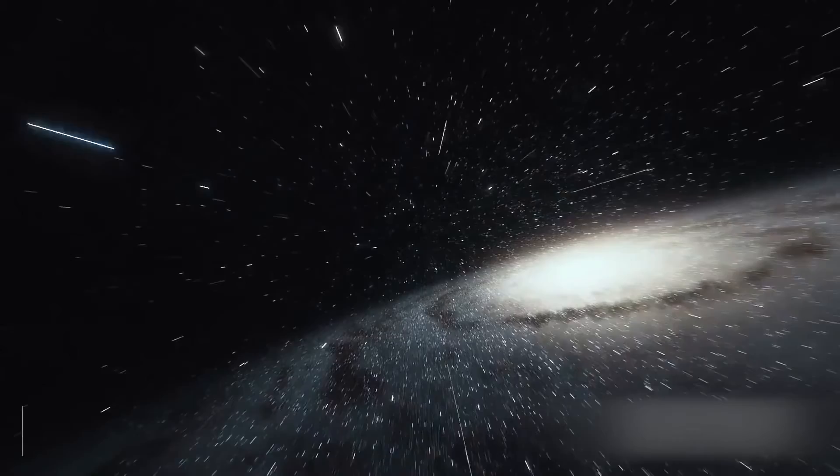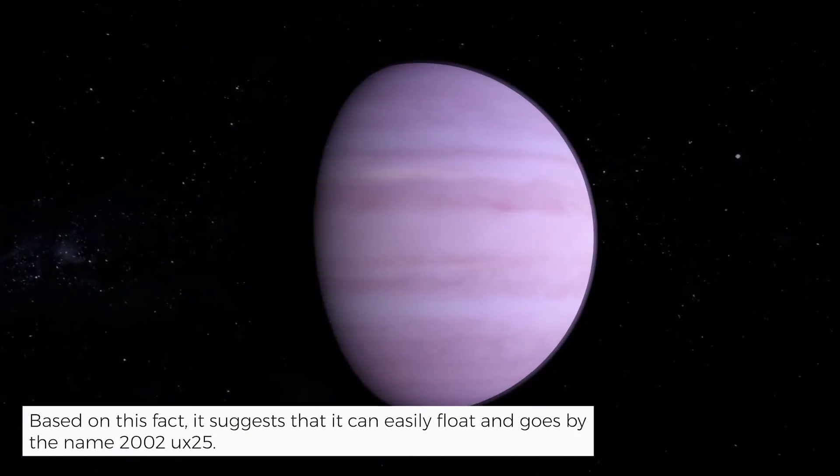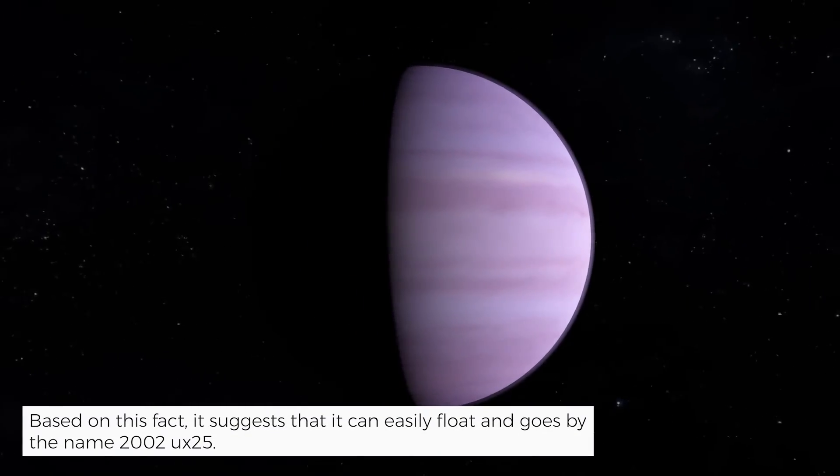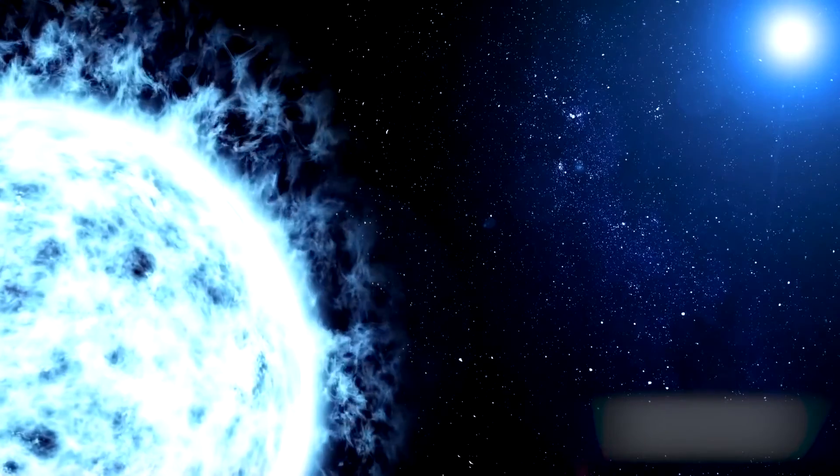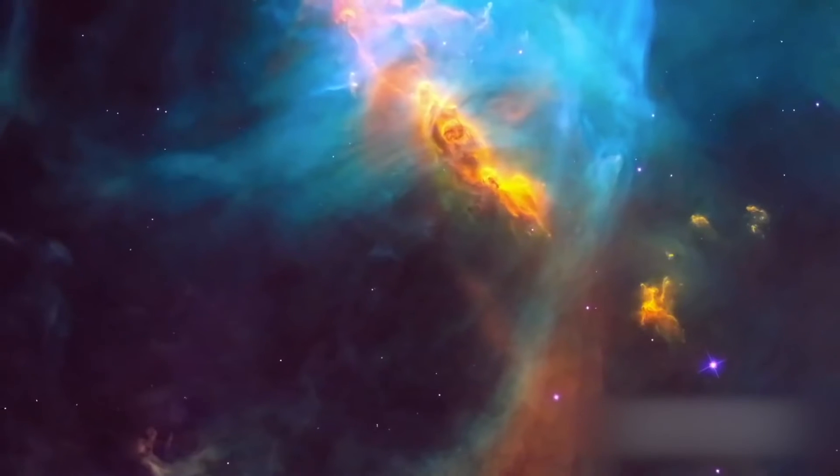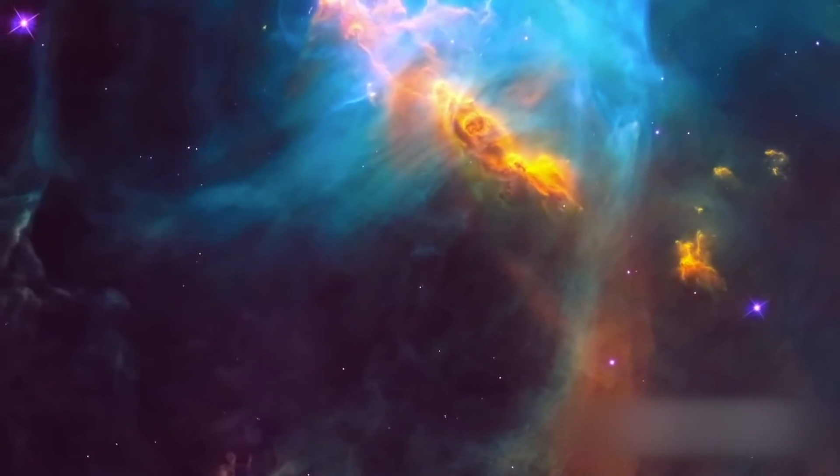Well, we did not know until now. Based on this fact, I suggest that it can easily float and goes by the name 2002 UX25. But its low density is a huge mystery for everyone owing to its high porosity. Another interesting object is somewhat four times smaller than UX25, but has lots of stories on its back.